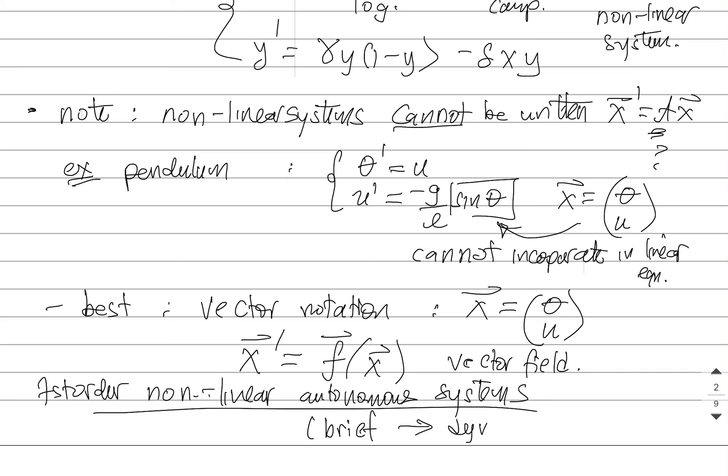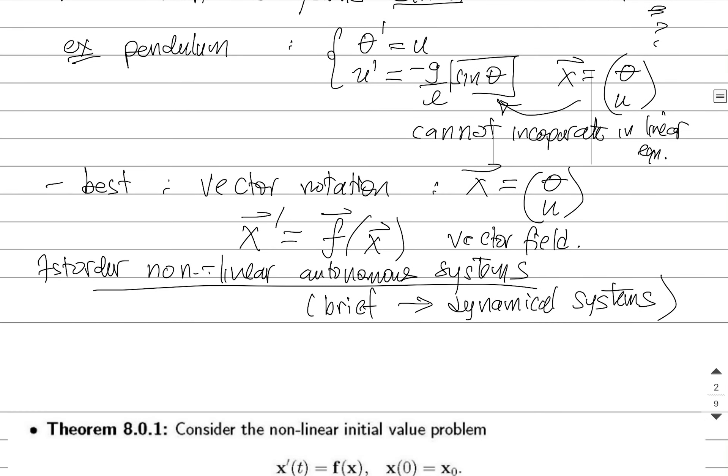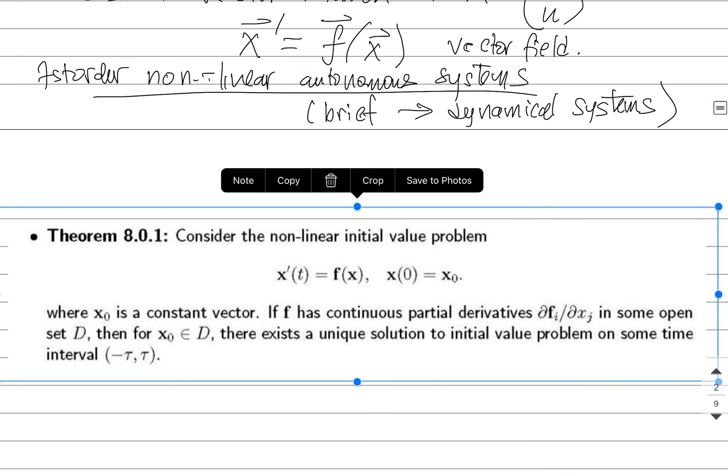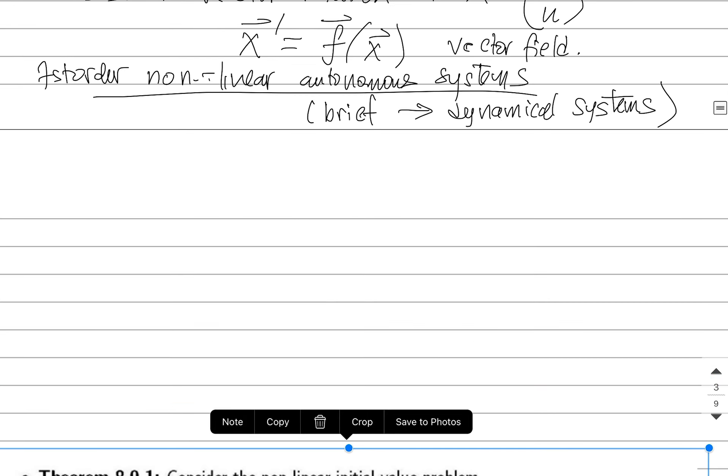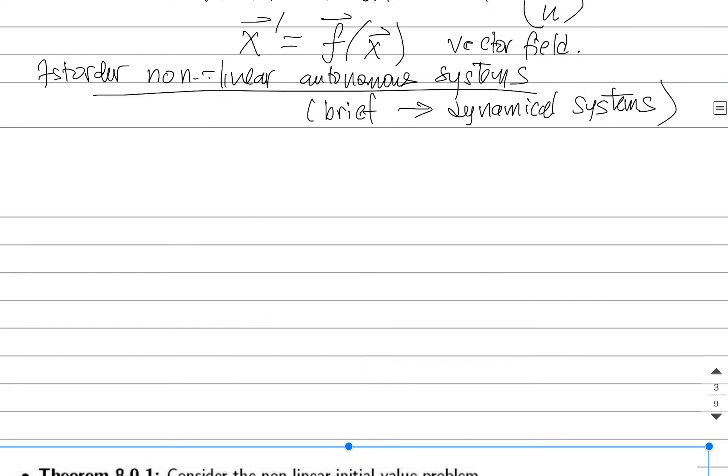If you continue on in your studies in math, there are courses in a field called dynamical systems that really go in depth into how to deal with non-linear problems and non-linear systems. And why do we need another course entirely? Because what we're going to find is that non-linear systems are hard. So the point here, non-linear systems are hard to solve explicitly.